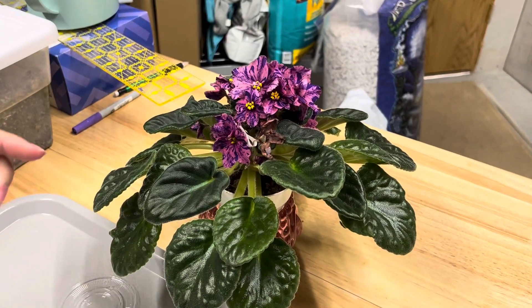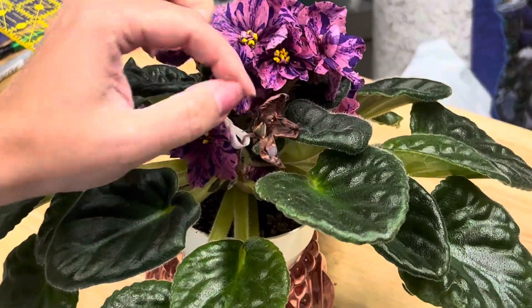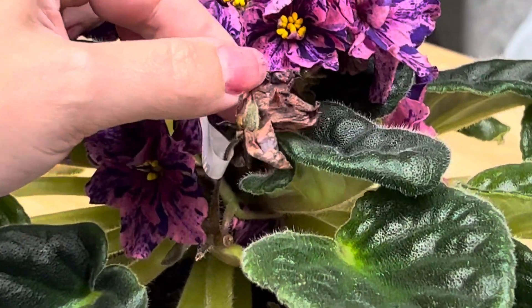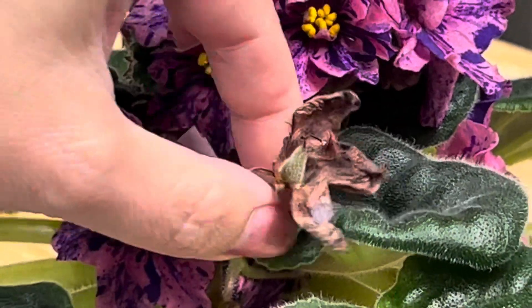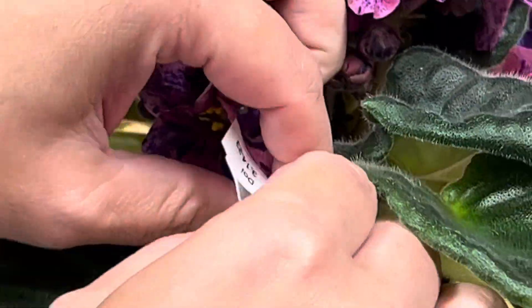All right, it has been 140 days. Looks like the seed pod is turning brown now, the stem is brown. I'm going to take this off of there.